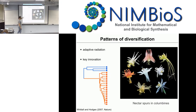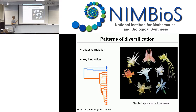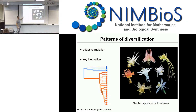Our task is to build a statistical model that can identify if there was an adaptive radiation. Another thing we're really interested in is finding if there were key innovations leading to rapid radiations, or if there are characters correlated with diversification rates — for example, like nectar spurs in columbines — leading to a higher rate of speciation or a higher rate of extinction, depending on the character.